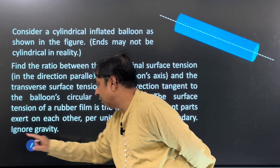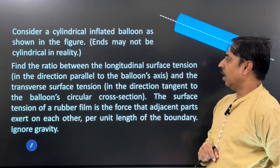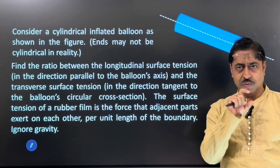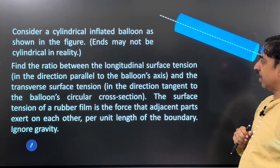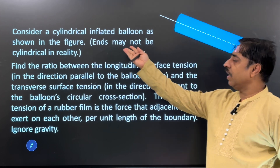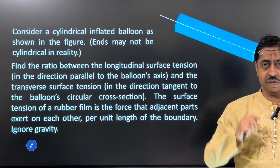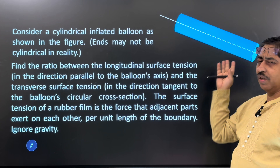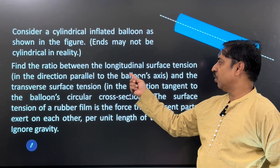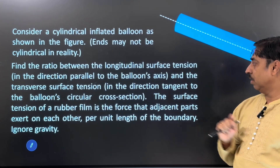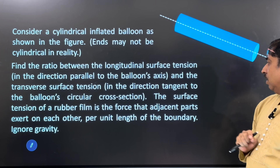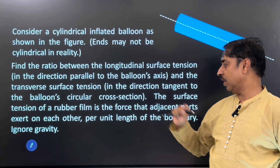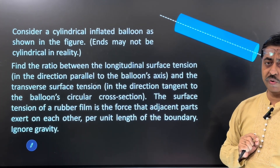The question says: consider a cylindrical inflated balloon as shown in the figure. This blue colored thing is a cylindrical balloon — it is a balloon in the shape of a cylinder, inflated with air inside it. Such balloons do exist in reality, though the ends may not be exactly cylindrical. Find the ratio between longitudinal surface tension and the transverse surface tension. The surface tension of a rubber film is the force that adjacent parts exert on each other per unit length of the boundary. Ignore gravity.